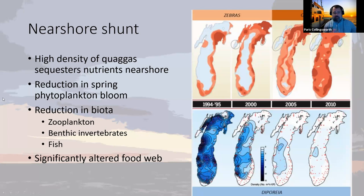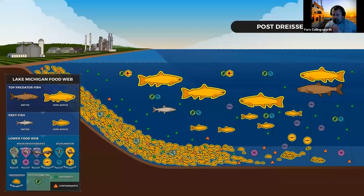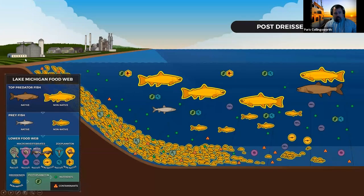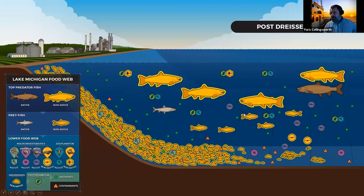Via these mechanisms, quagga mussels can really significantly alter food webs in the Great Lakes. Going back to the cartoon, this is what it looks like now in Lake Michigan: in the watersheds, a lot of agriculture and some industrial activity. Non-native mussels blanketing the bottom. Really low numbers of native top predators and prey fish. Pretty high densities of invasive or non-native predators and prey fish. That's the current situation.